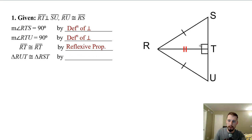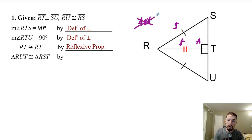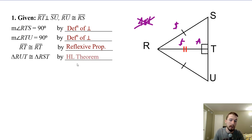So we're able to write a congruency statement: triangle RUT is congruent to triangle RST, meaning all the other parts are congruent as well. What postulate are we using? We have our angle, our side, and our other side — angle-side-side, or 'money side, money side.' The angle's not in between the two sides, so it's not side-angle-side. We can't use the donkey postulate unless we have a right triangle. And we do have a right angle, so we call it a different name — the hypotenuse-leg theorem.